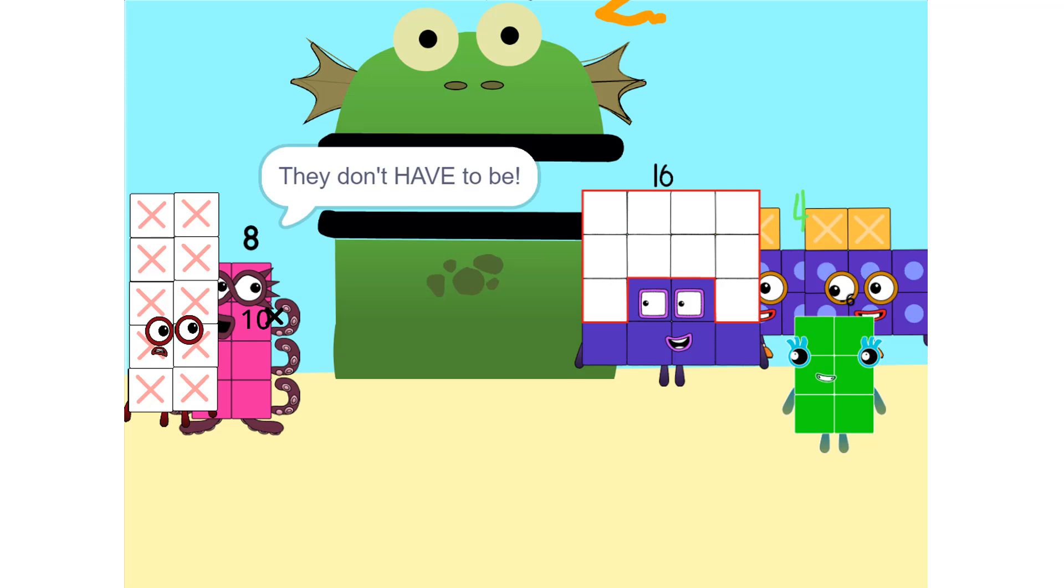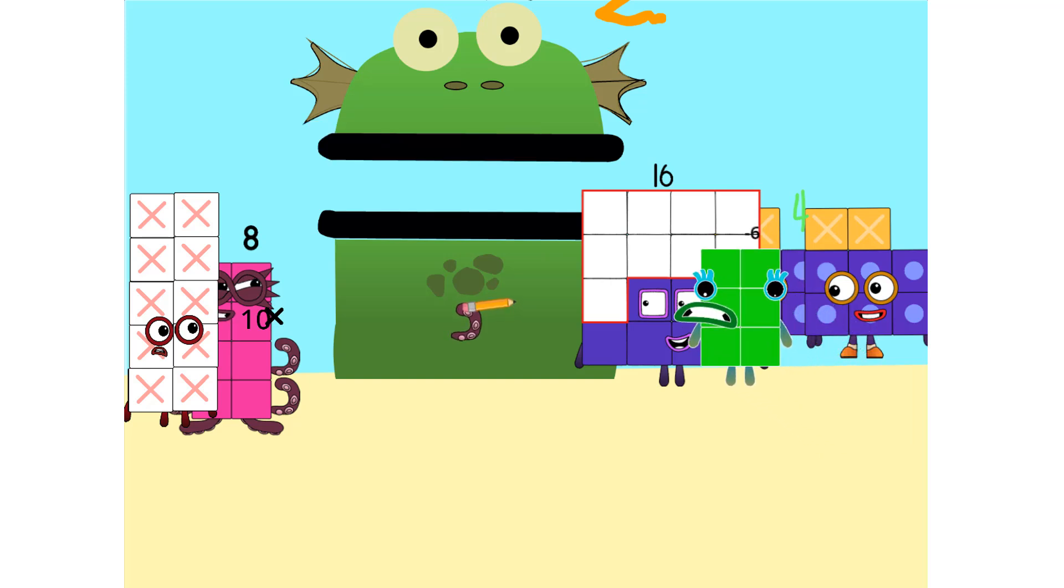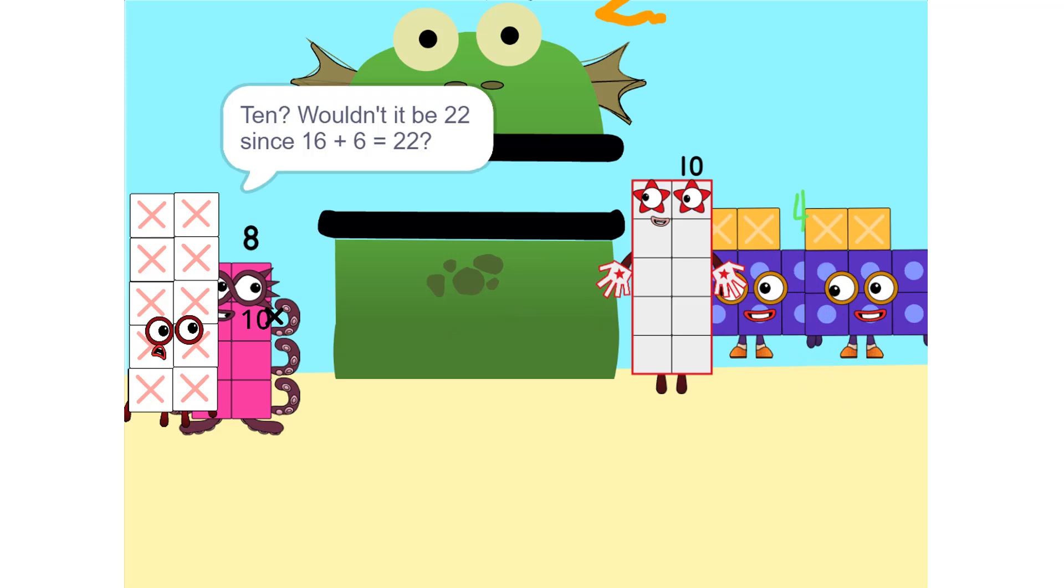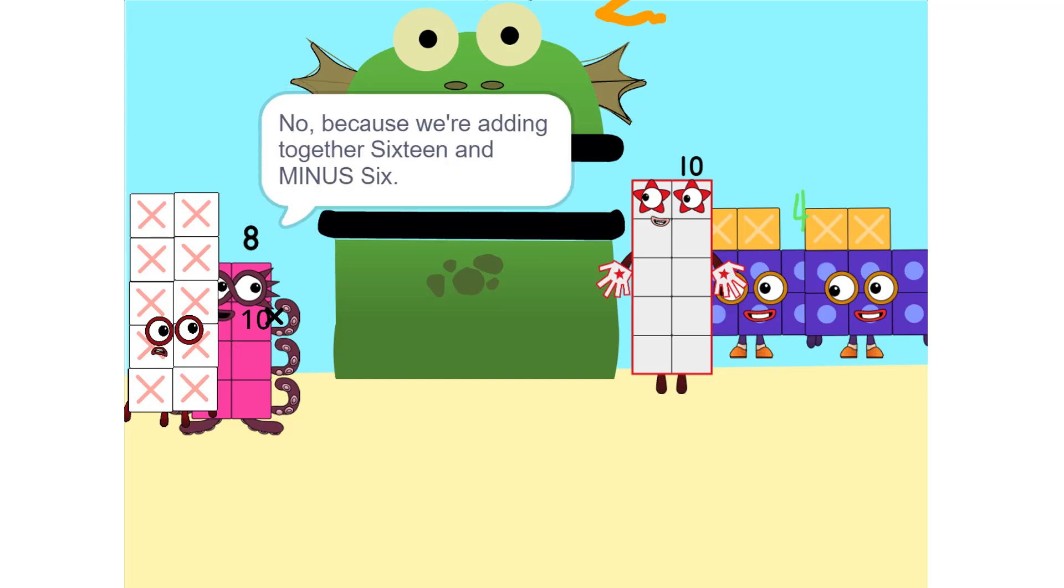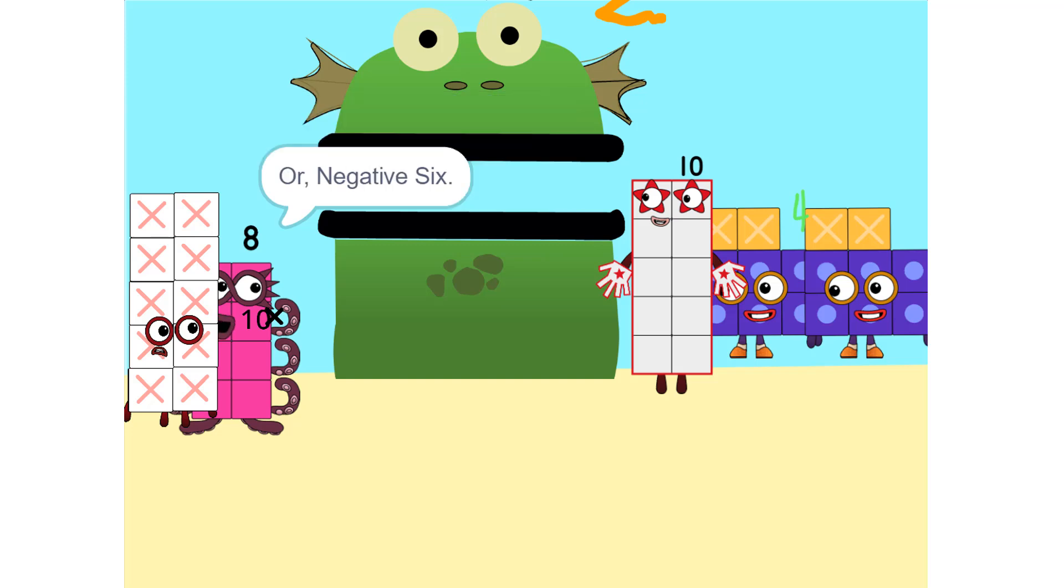They don't have to be. Could we do it if we were touching? Yeah. We can also add these together. 10? Wouldn't it be 22 since 16 plus 6 equals 22? No, because we're adding together 16 and minus 6, or negative 6. So it's 10. Oh.